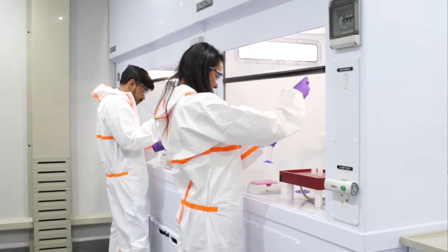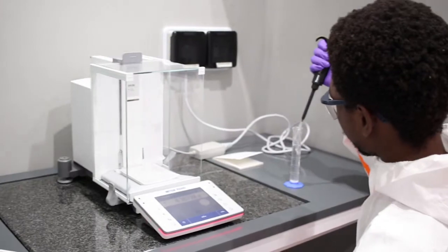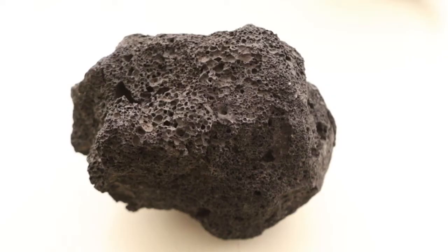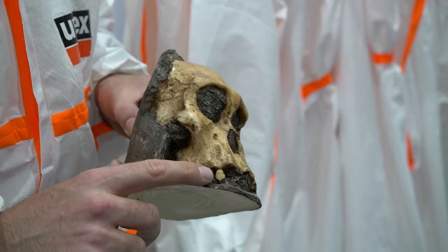So the WITS Isotope Geoscience Laboratory is designed and planned to separate elements of interest from earth materials like rocks, fossils, meteorites, and ground water.